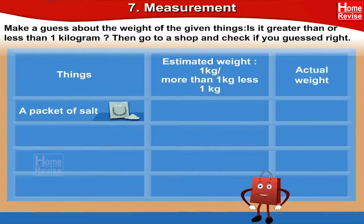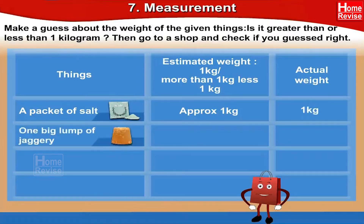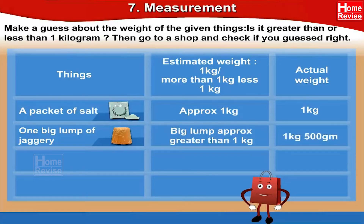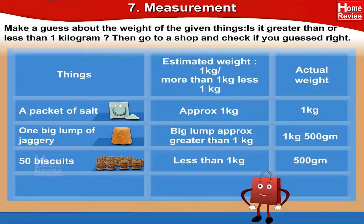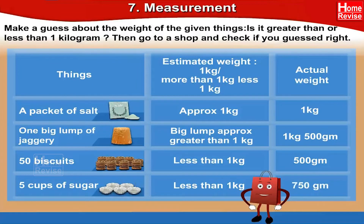A packet of salt: the estimated weight is approximately 1 kg, while the actual weight is 1 kg. The estimated weight of the next item is less than 1 kg, while the actual weight is 500 grams. 50 biscuits: the estimated weight is less than 1 kg, while the actual weight is 500 grams. 5 cups of sugar: the estimated weight is less than 1 kg, while the actual weight is 750 grams.